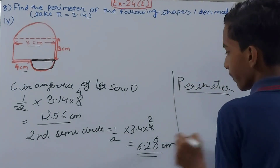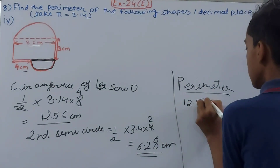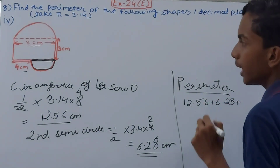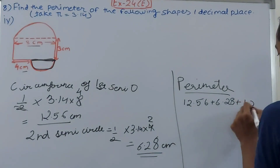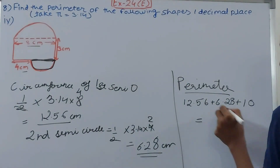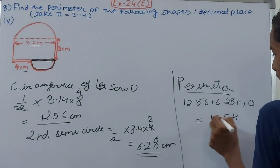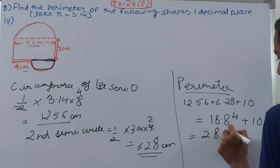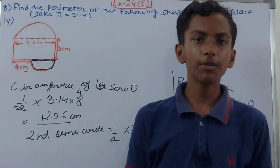Total perimeter = 12.56 + 6.28 + 3 + 3 + 4 = 12.56 + 6.28 + 10 = 18.84 + 10 = 28.84 centimeters. That is the perimeter of the final figure.